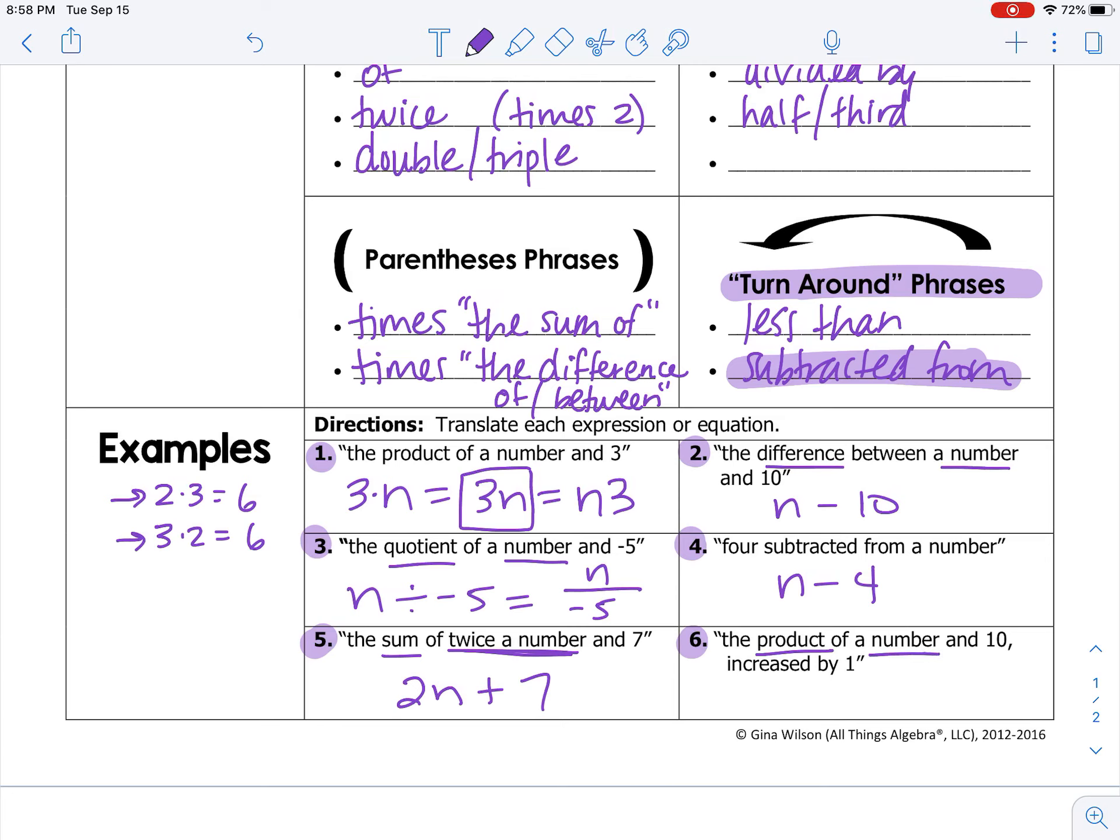The product, again, we're talking about multiplication of a number and ten. This is 10n increased. So again, it's plus by one. So plus one.